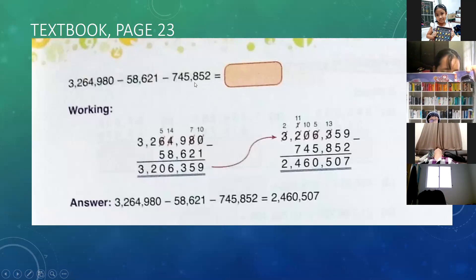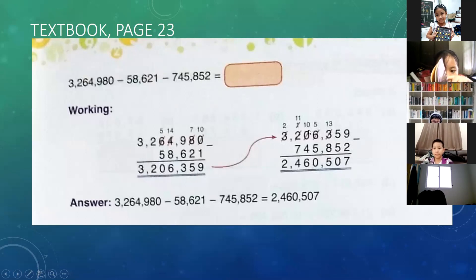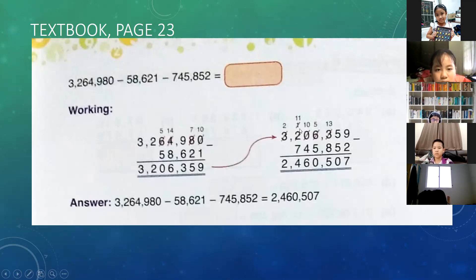5 minus 5 equals 0. 0 becomes 10 — 10 minus 4 equals 6. 2 becomes 1, then 1 becomes 11. 11 minus 7 equals 4. 3 becomes 2, and 2 minus 0 equals 2. So when you are doing the work, follow these steps carefully.